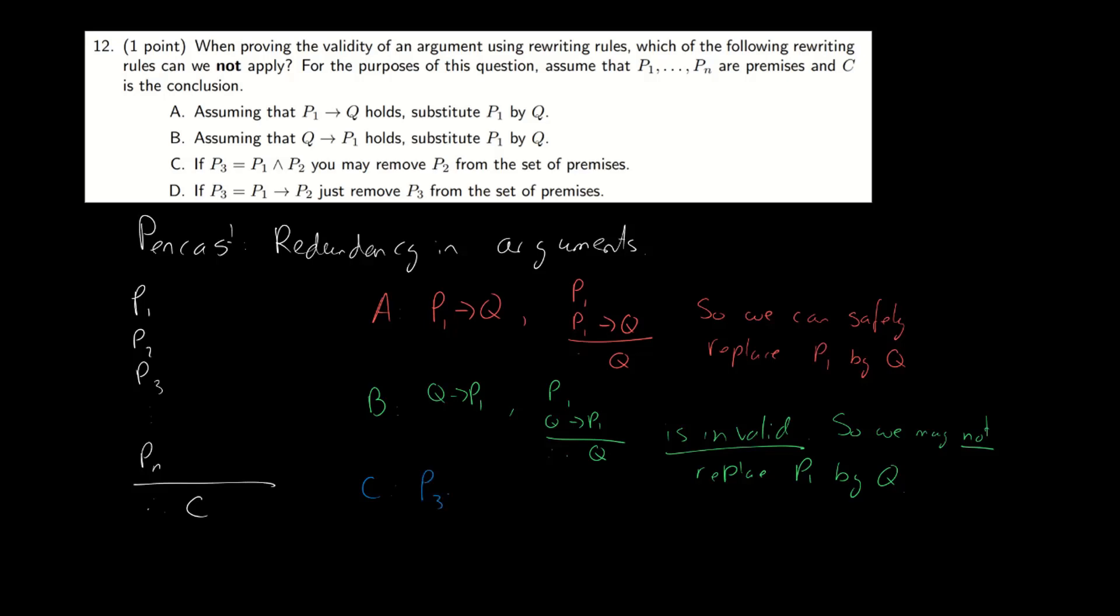But let's try answer C and D anyway. So answer C says P3 is P1 and P2. Well, from P1 and P2, we can derive P1. And from P1 and P2, we can also derive P2.